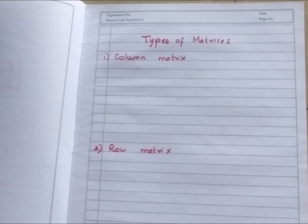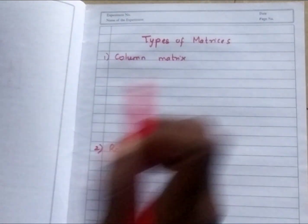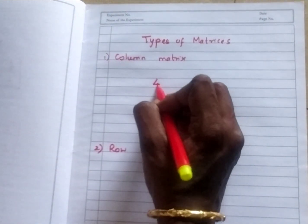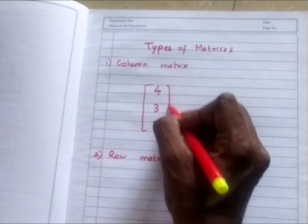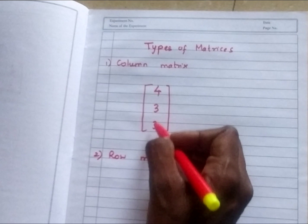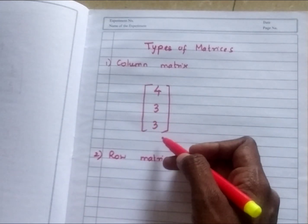Hello students, today let's learn types of matrices. So first we will learn column matrix. In this itself the answer is there. Column means only the column will be like this. There will be, see, only like one column. This is called column matrix.